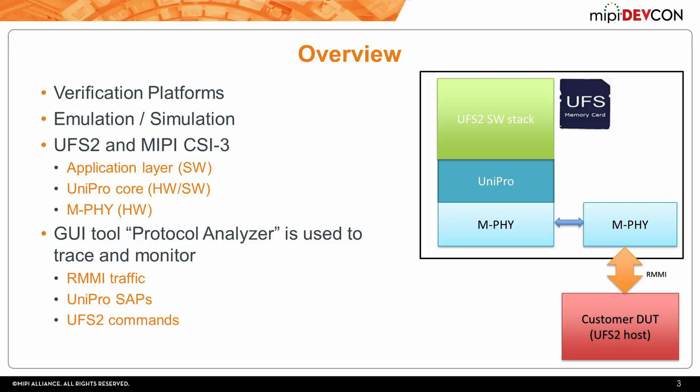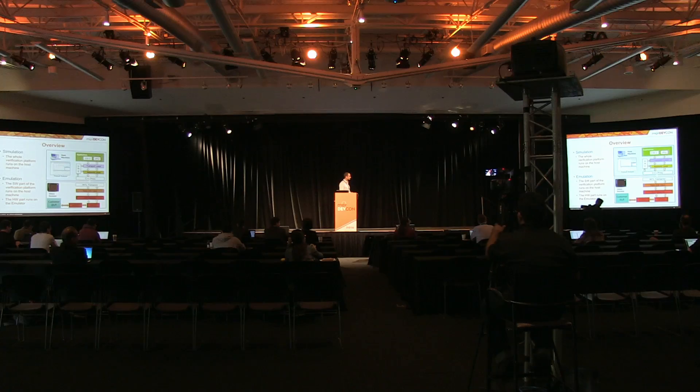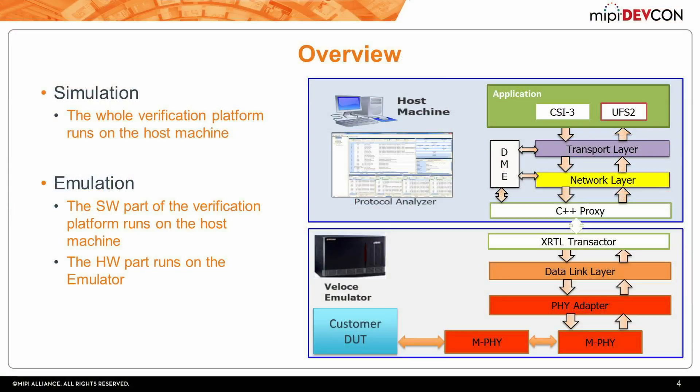The end goal is to test a customer that has a UFS 2 or CSI 3 host controller. Part of the platform is implemented in software — the transport layer, network layer, and DME, along with the application layer of the protocol. These are implemented in pure software. While the data link layer, the file adapter, and the M5 layers are implemented in hardware.